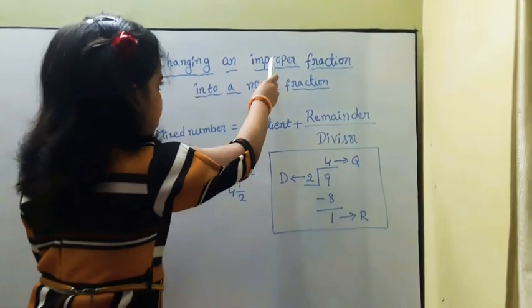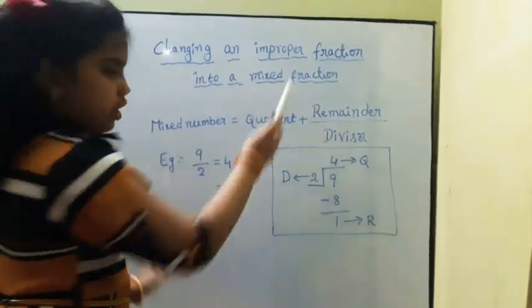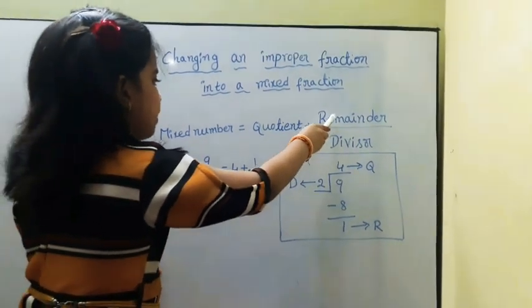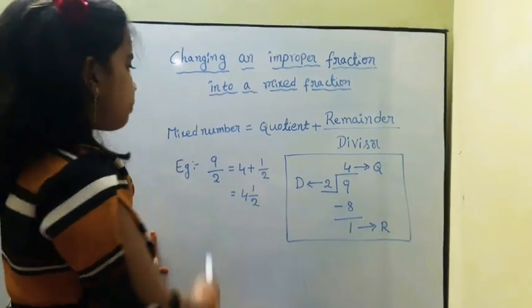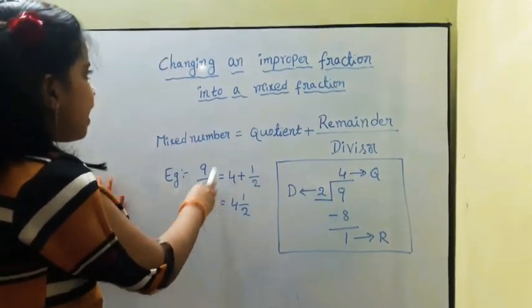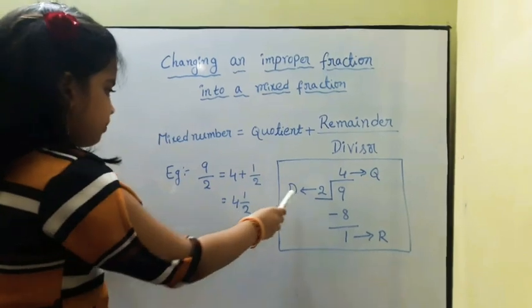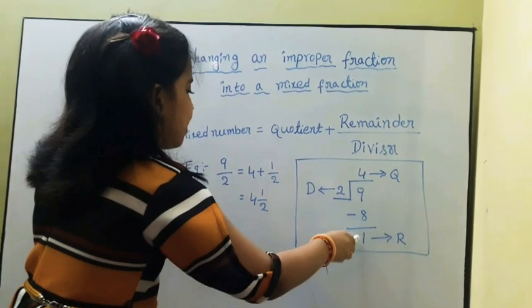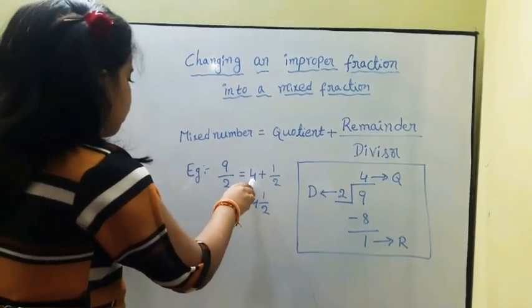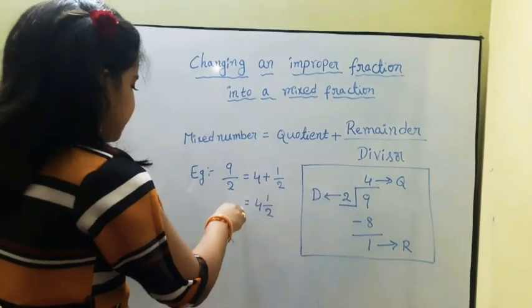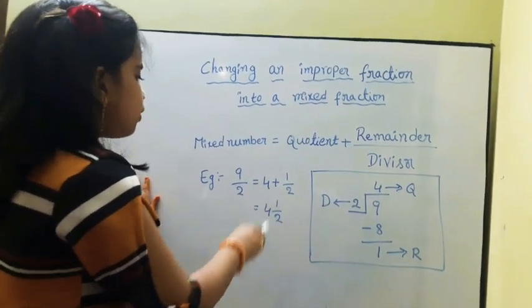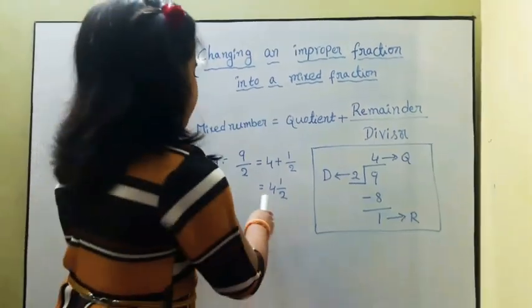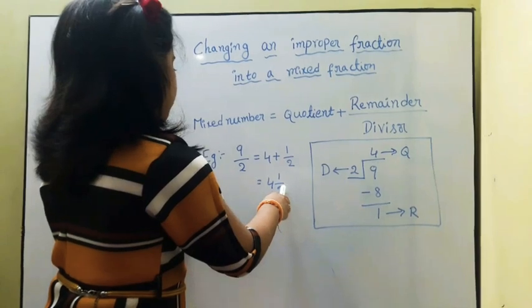Next, changing an improper fraction into a mixed fraction. The mixed number equals quotient plus remainder by divisor. For example, 9 by 2 is an improper fraction. Here, 2 is the divisor, 4 is the quotient, and 1 is the remainder. So 9 by 2 equals 4 plus 1 by 2, which equals 4 and 1 by 2. Therefore, 4 and 1 by 2 is the mixed fraction.